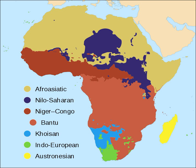Several languages spoken in Africa belong to language families concentrated or originating outside the African continent. Malagasy belongs to the Austronesian languages and is the westernmost branch of the family. It is the national and co-official language of Madagascar, and one of its dialects called Bushi is also spoken in Mayotte. The ancestors of the Malagasy people migrated to Madagascar around 1,500 years ago from Southeast Asia, more specifically the island of Borneo. The origins of how they arrived to Madagascar remains a mystery; however, the Austronesians are known for their seafaring culture.